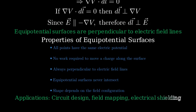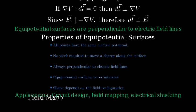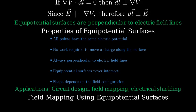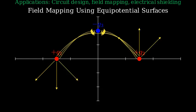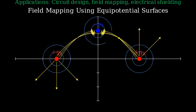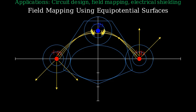Understanding equipotential surfaces helps us analyze and design electrical systems, from simple circuits to complex electronics. Let's look at a practical example of mapping electric fields using equipotential surfaces. Here's a setup with multiple charges — two positive charges and one negative charge. The electric field lines form complex patterns around these charges, and the equipotential surfaces form closed curves around the charges.